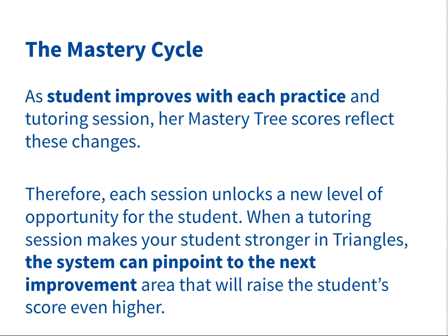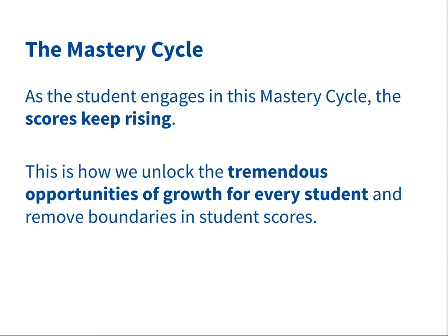So the more the student does and the more the student engages with SAT Up, the more information is provided, but also the more improvement happens because each weakness is now being eliminated. As the student practices with the mastery tree, scores continue to rise too. They don't plateau like with traditional general learning, because as each weakness is removed, the score is going to go up incrementally every time. So the general score for math would go up, remove another weakness and it goes up again, remove another weakness and it goes up again. This is how we unlock tremendous growth and improvement for every student — by finding those little specific limits or boundaries and removing them to affect the greater whole.